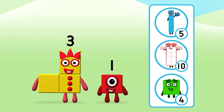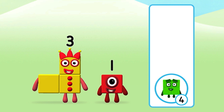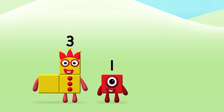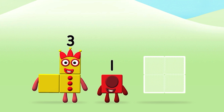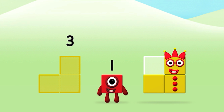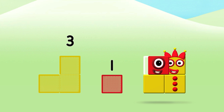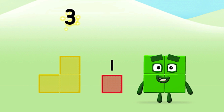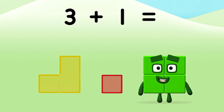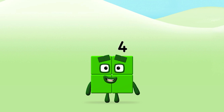Do you know which number block you'll make when you add these two number blocks together? Well done! You were right! Add the number blocks together. Three plus one equals four. Well done! You made number block four!